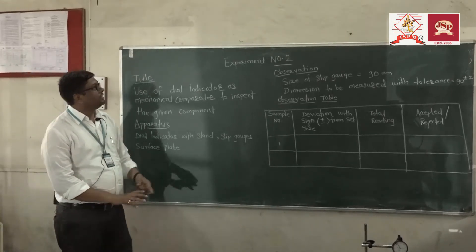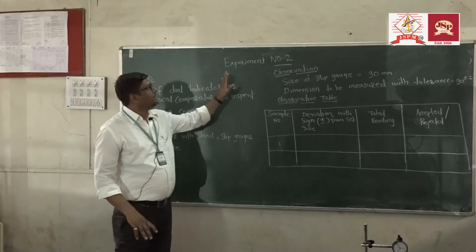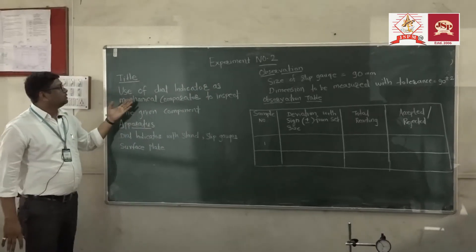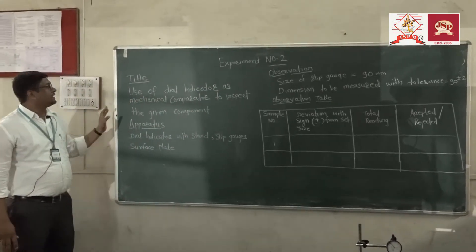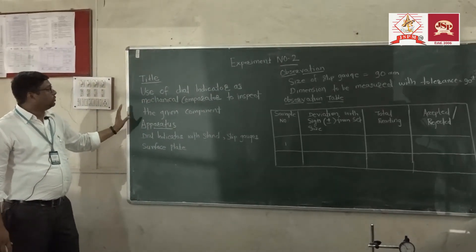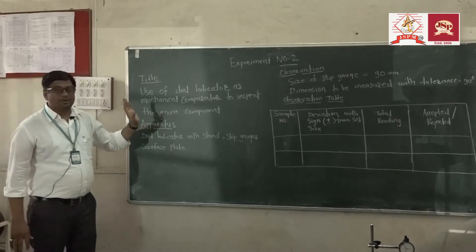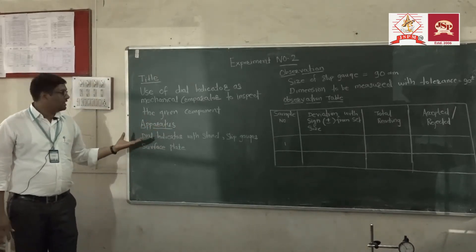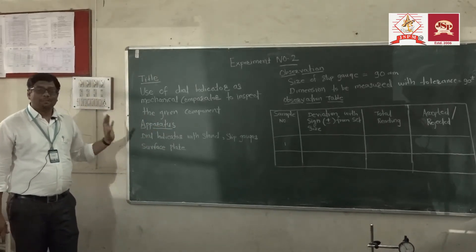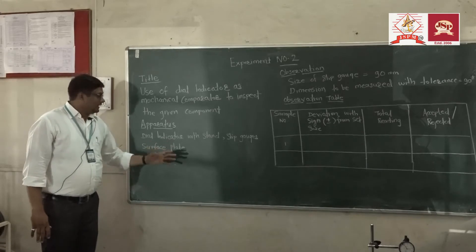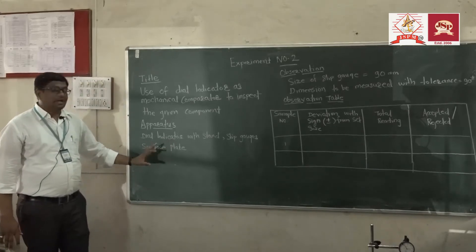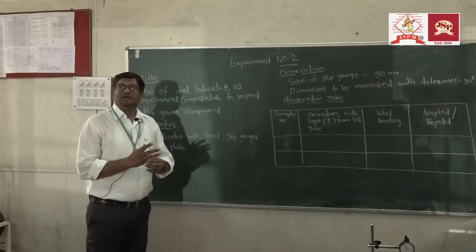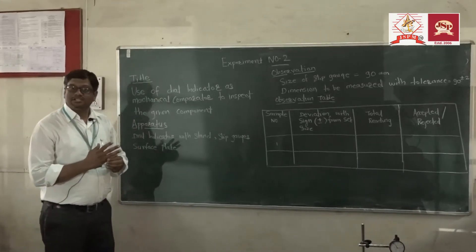In this subject we study experiment number two, that is the use of a dial indicator as a mechanical comparator to inspect the given component. For that experiment we require the following apparatus: a dial indicator, slip gauge, surface plate, and the given jobs for inspection.